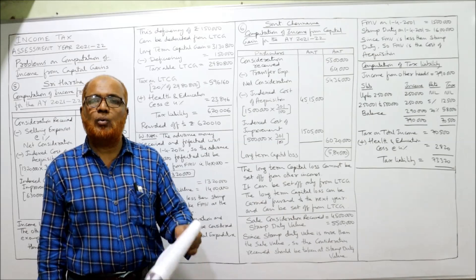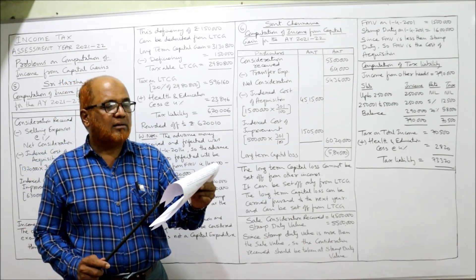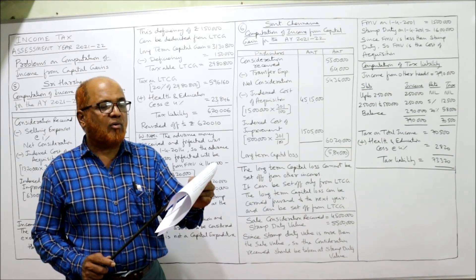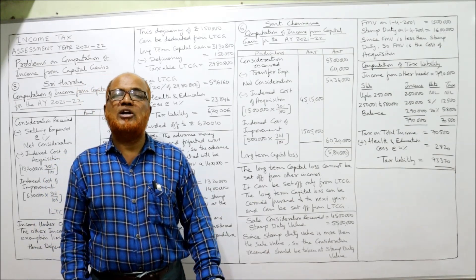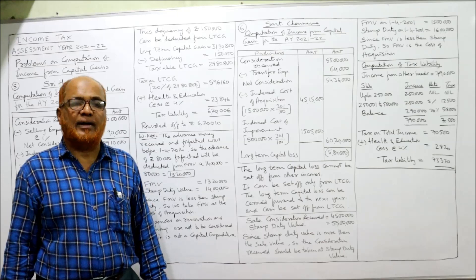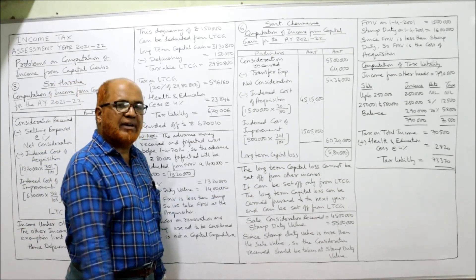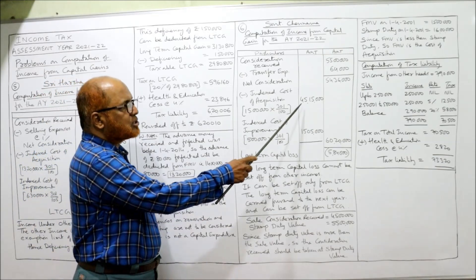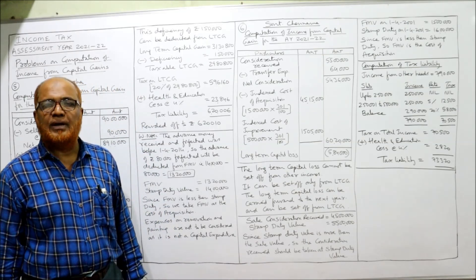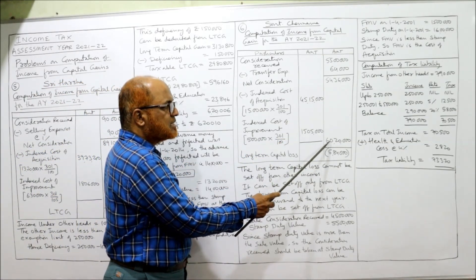For the improvement: in August 2001, one more floor was added by incurring an expenditure of Rs. 5 lakh. So indexed cost of improvement: Rs. 5 lakh × 301/100 = Rs. 15,05,000. Adding cost of acquisition and cost of improvement: Rs. 45,15,000 + Rs. 15,05,000 = Rs. 60,20,000 is the total indexed cost.